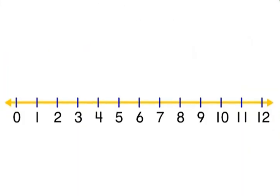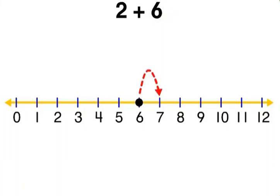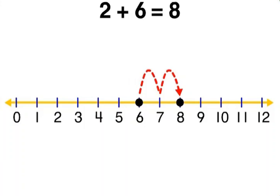Let's use the number line again to add. This time, let's add 2 plus 6. Since we start with the greater number, let's find 6 on the number line. Now we count on 2 more: 7, 8. 2 plus 6 equals 8.